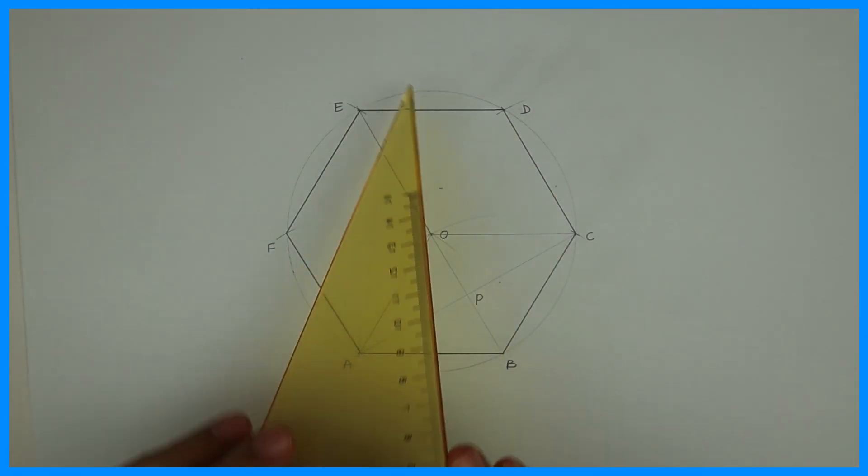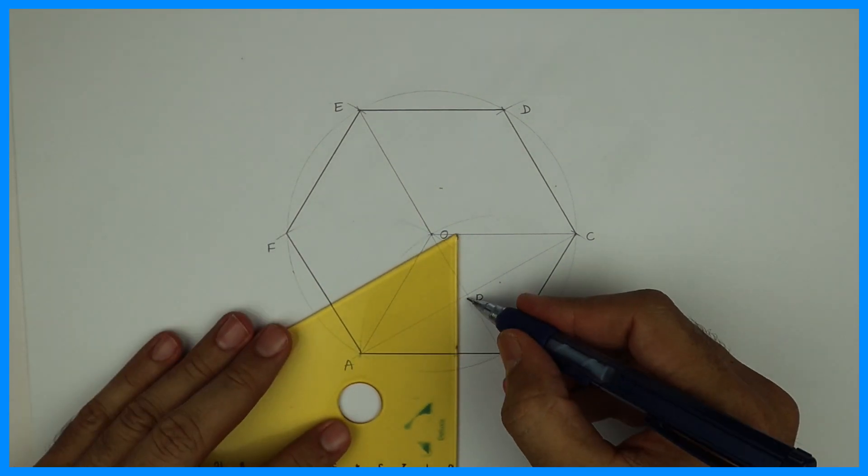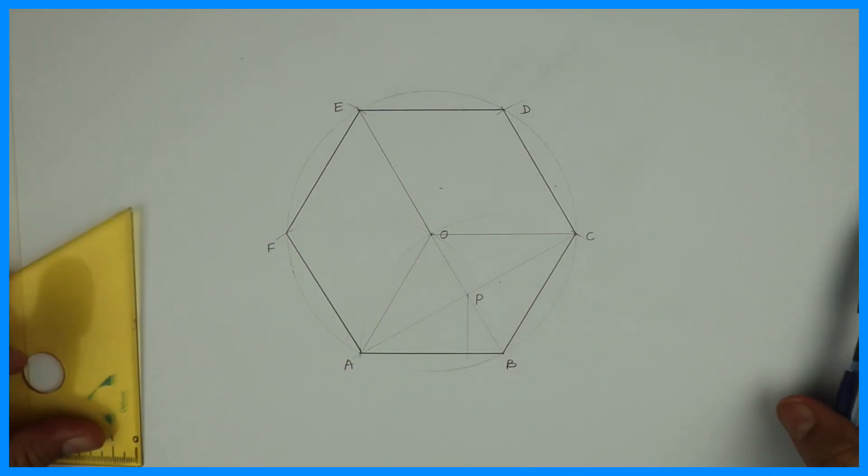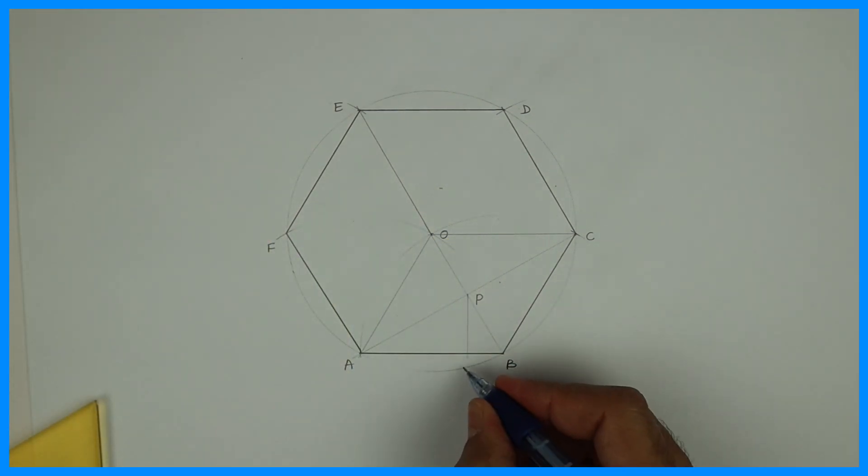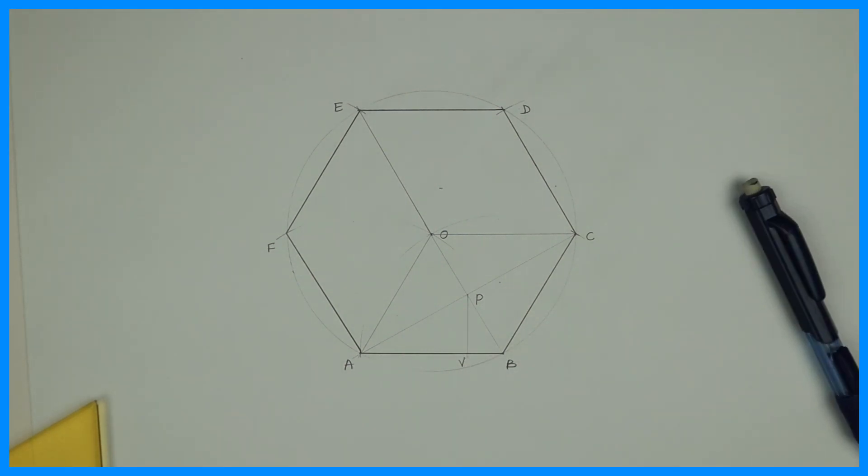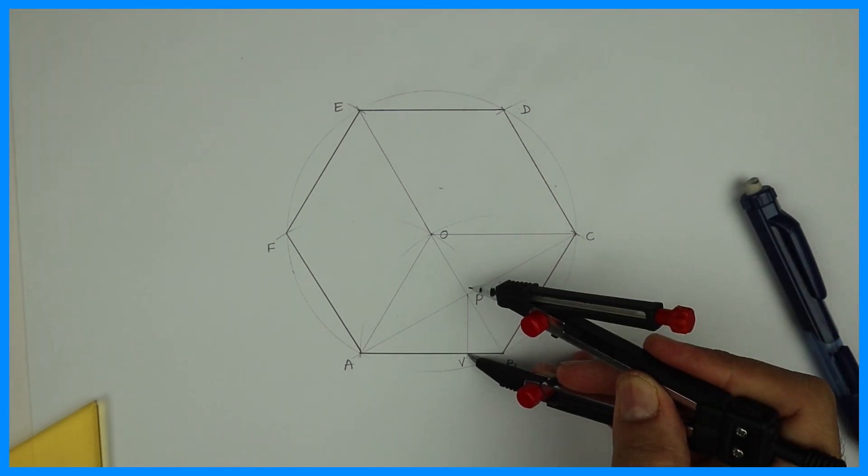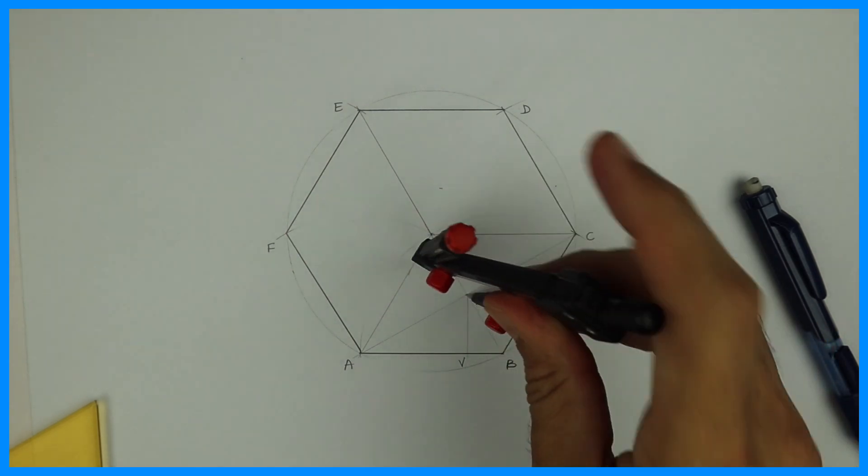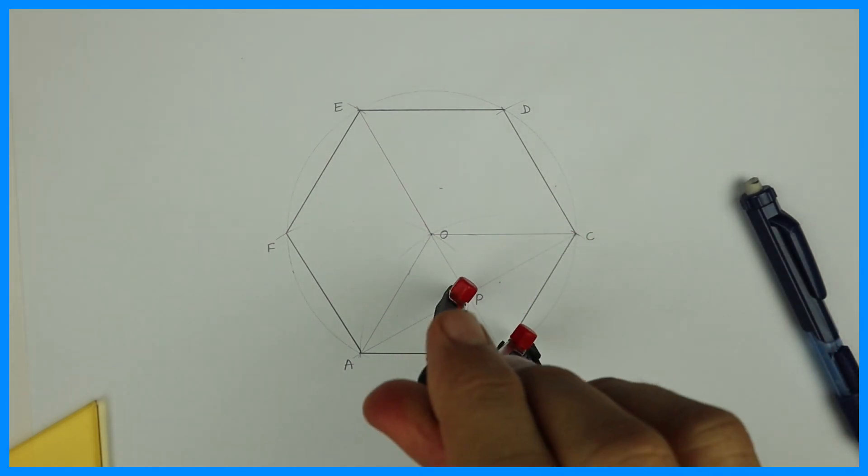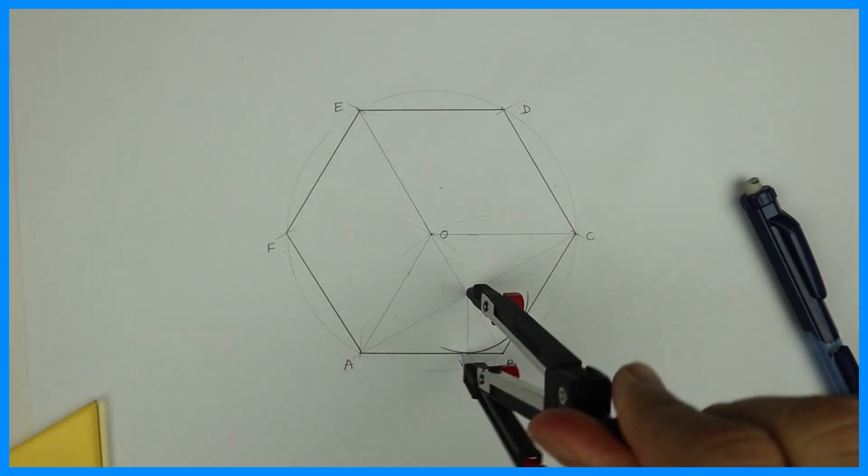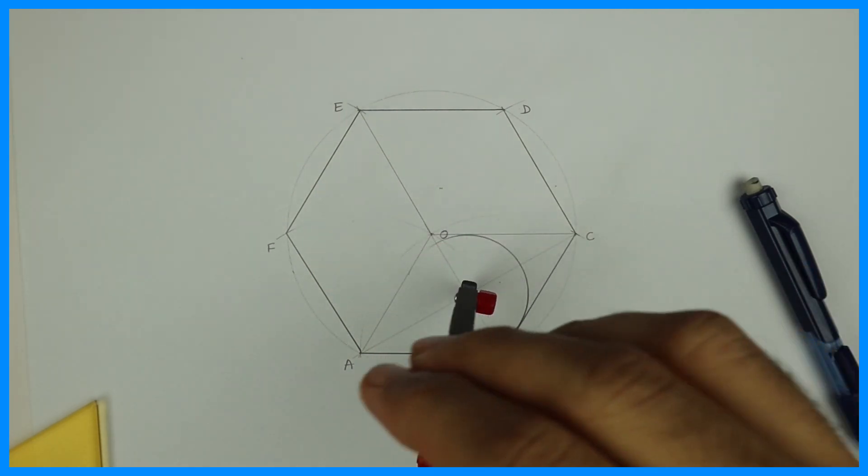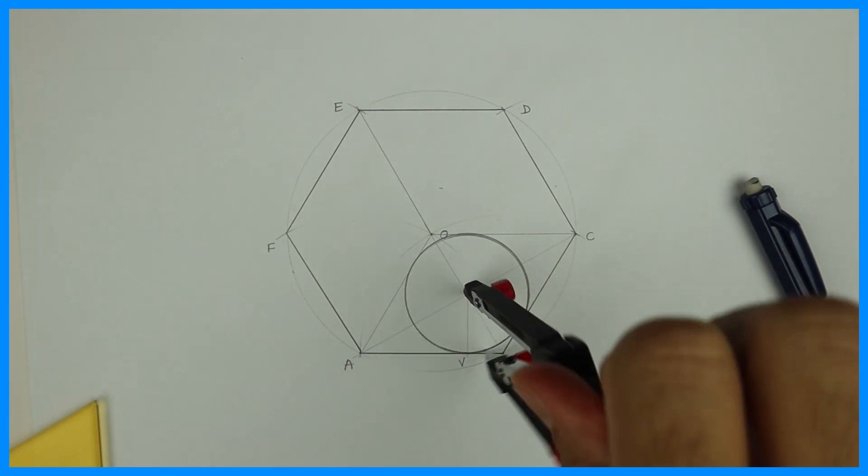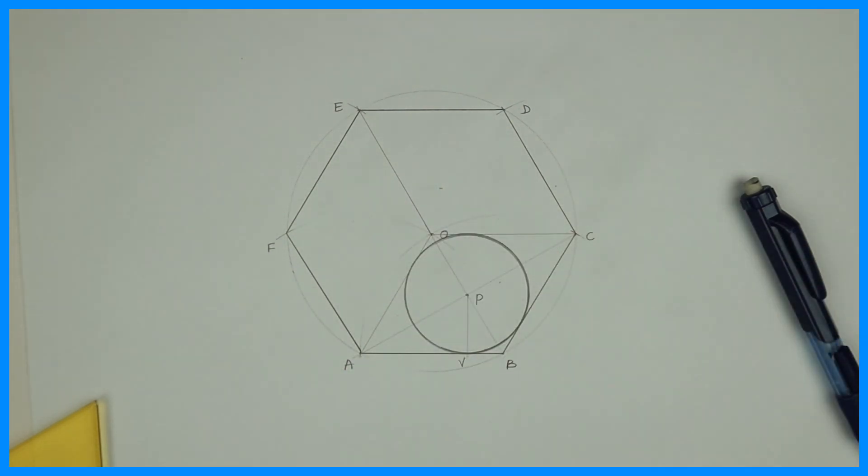This is point P. Now from point P, draw a vertical line - it will be point V. Take P to V in your compass and from point P draw this circle. If you see, this circle starts touching two sides of the hexagon. We divided the hexagon into three parts.